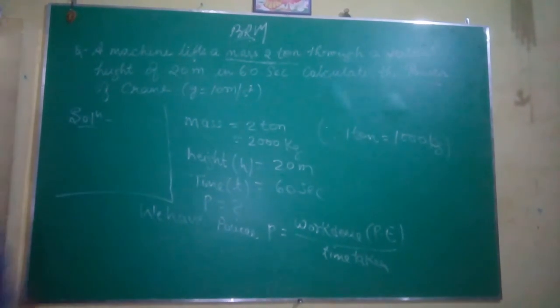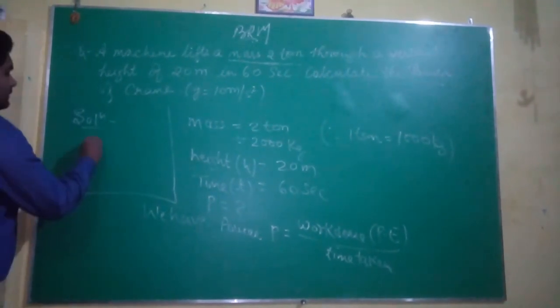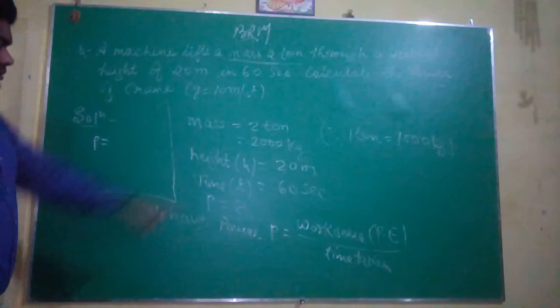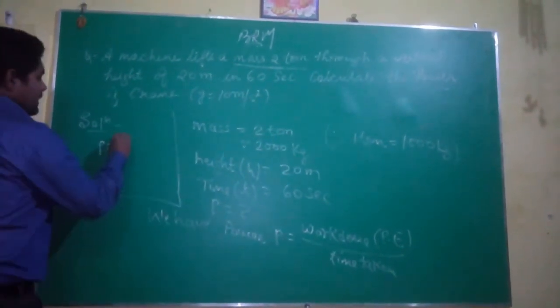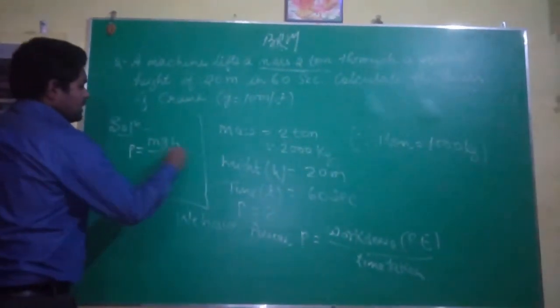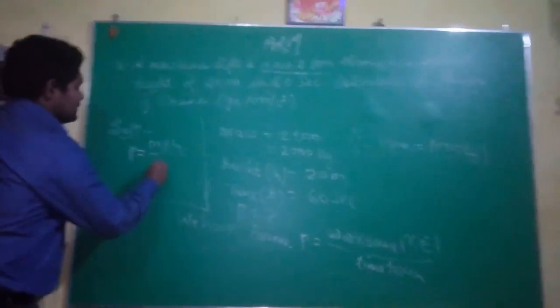We will solve it here. Work done is MGH. Potential energy equals MGH. So P equals MGH upon time T.